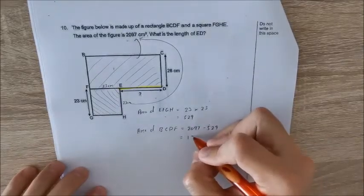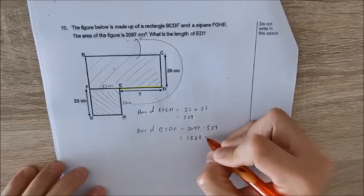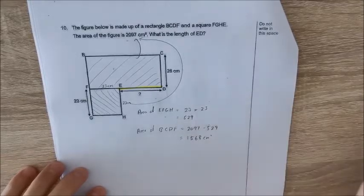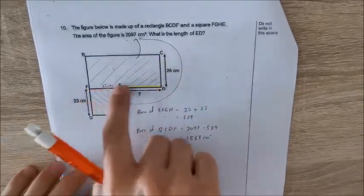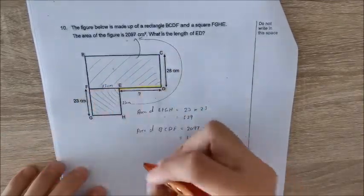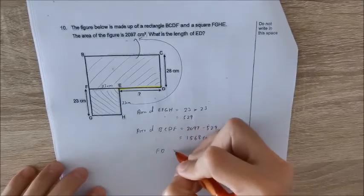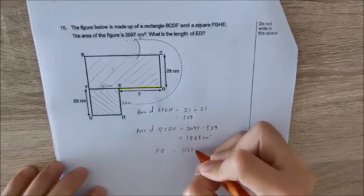Okay, next, this is the area of the rectangle. I have the breadth, so I can find what is the length. Okay, so FD equals to 1568 divided by 28. I will have 56 cm.